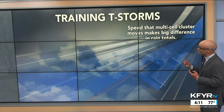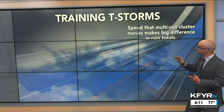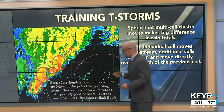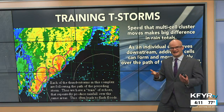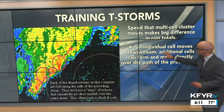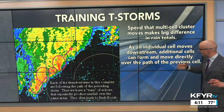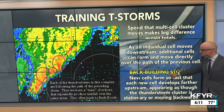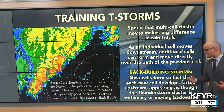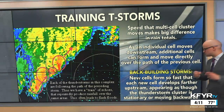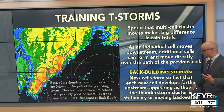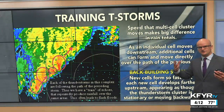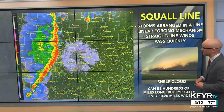New cells form upwind of previous cells to take their place. As they propagate forward, we can get new cells forming behind or nearby — that's when we can get training thunderstorms. The speed that the multi-cell cluster moves makes a big difference in rain totals. Cells that form in a line and move over the same location — like train tracks — each produce heavy rainfall that adds up and can lead to flash flooding over saturated soils. You can also get back-building storms, where new cells form so fast that each new cell develops farther upstream, causing the multi-cell cluster to appear stationary or even move backwards, dumping a large amount of rain in a short time.